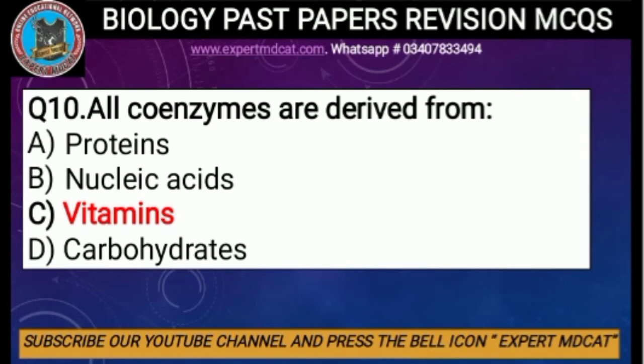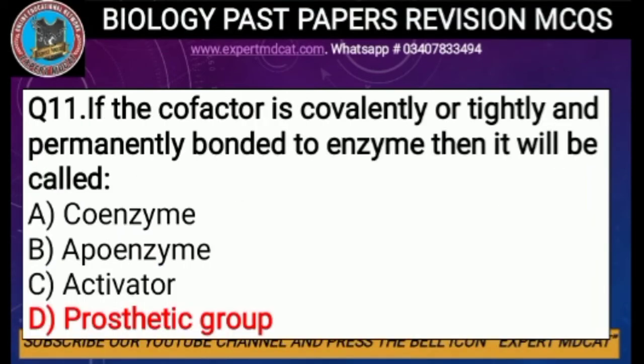Question number ten: all coenzymes are derived from — the answer is that most coenzymes are derived from vitamins. The correct option is C, vitamins. Question number eleven: if the cofactor is covalently, tightly, and permanently bonded to the enzyme, then it is called a prosthetic group. The correct option is prosthetic group.